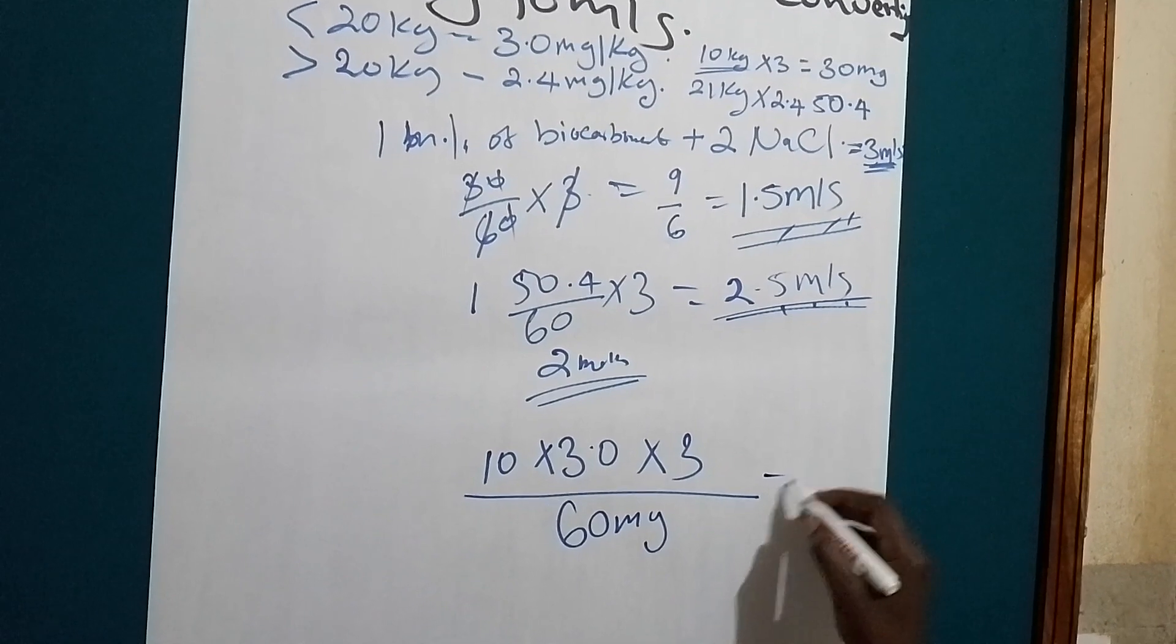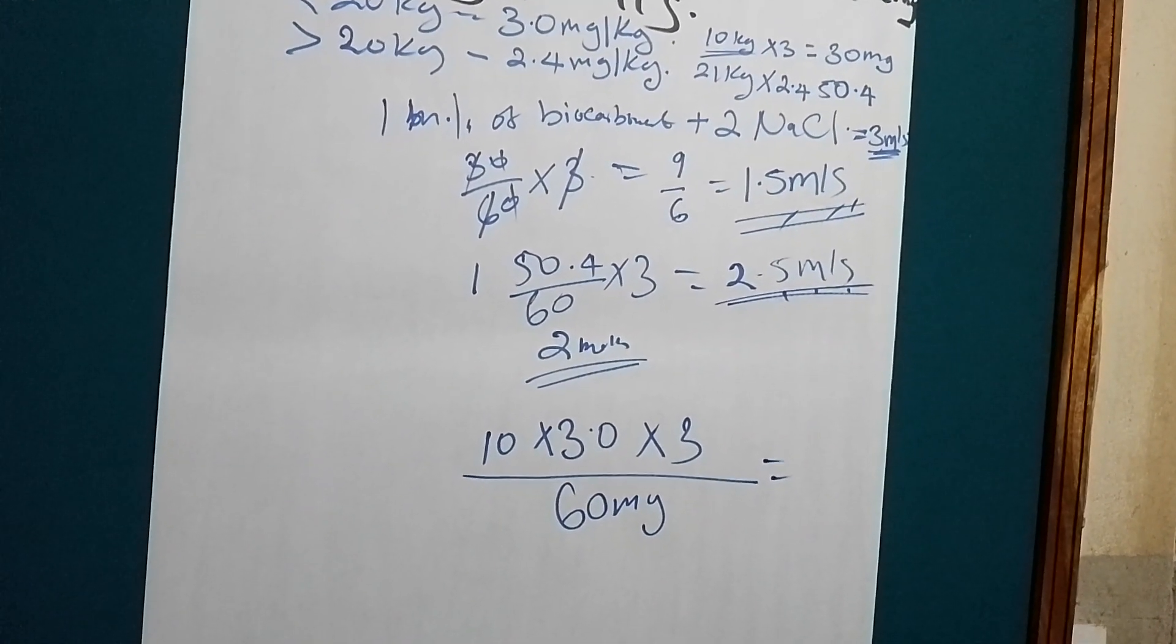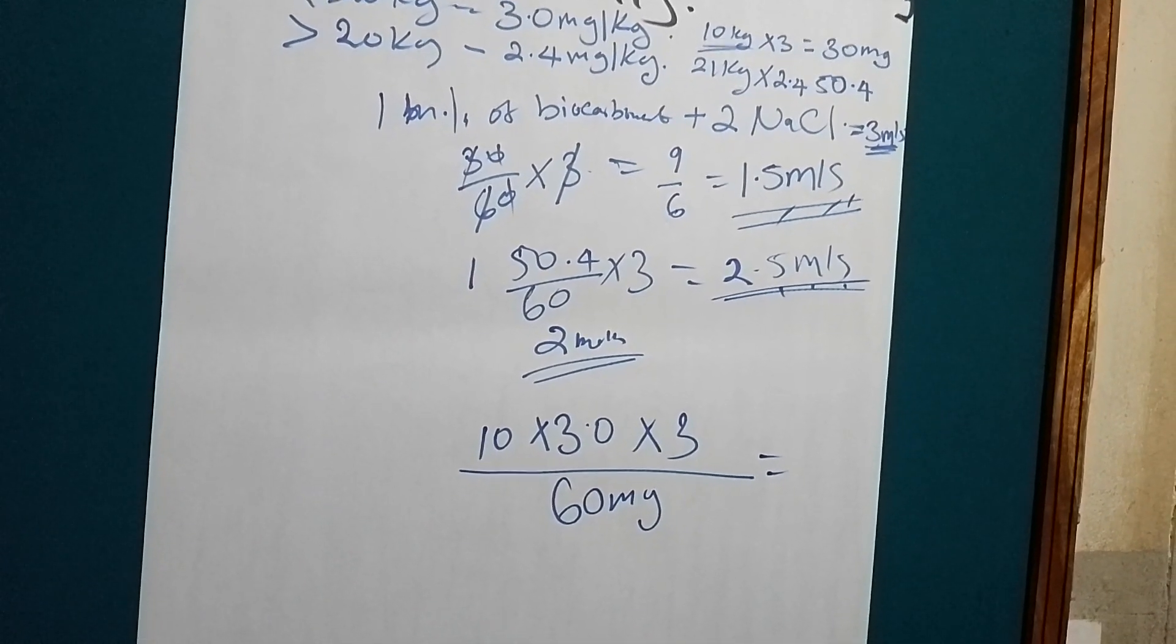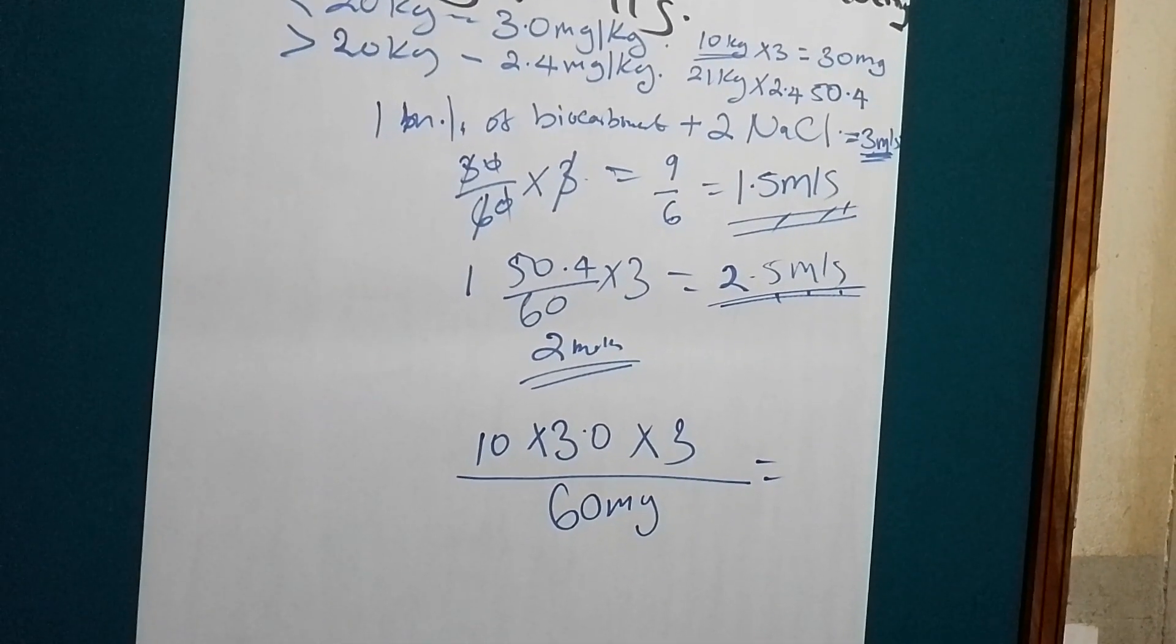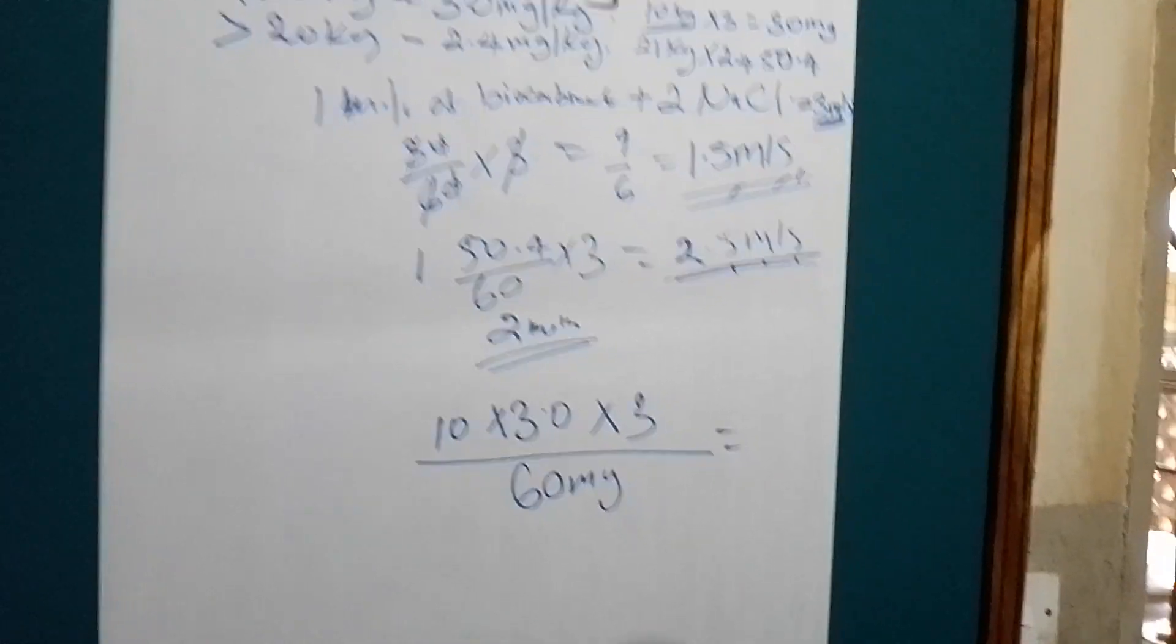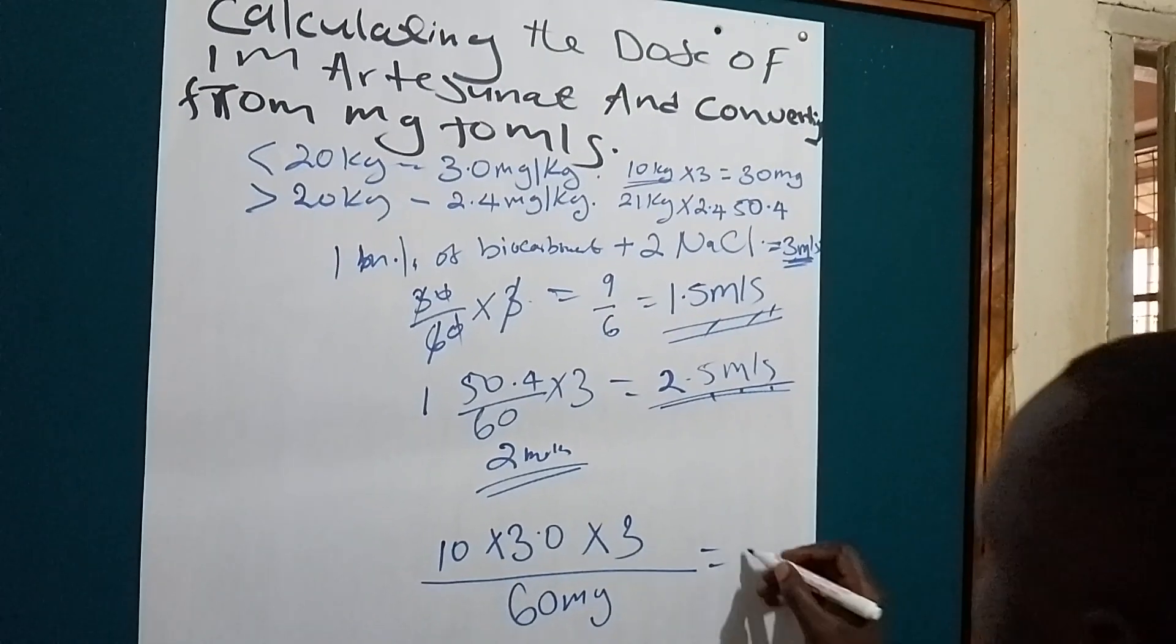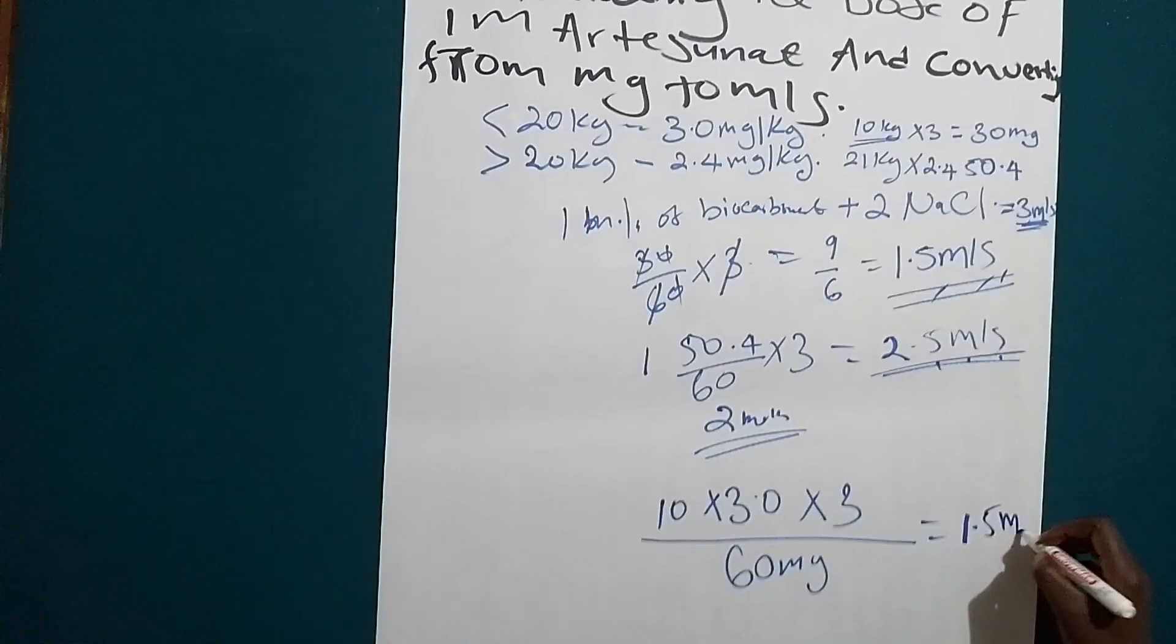So what will we get? Let's do the mathematics together. 10 times 3.0 times 3 divided by 60. So what will we get? We will get 1.5 milliliters.